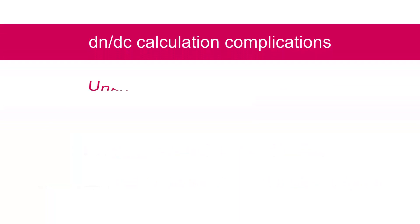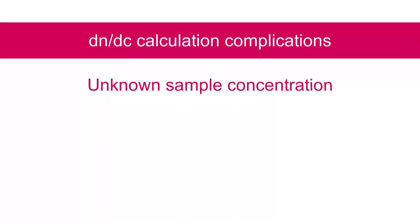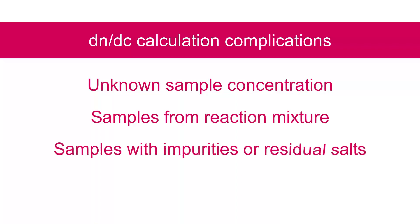Situations where the exact sample concentration is unknown can complicate DNDC value calculations. Examples include samples pulled straight from reaction mixtures, samples with impurities or residual salt present, and partially soluble samples.